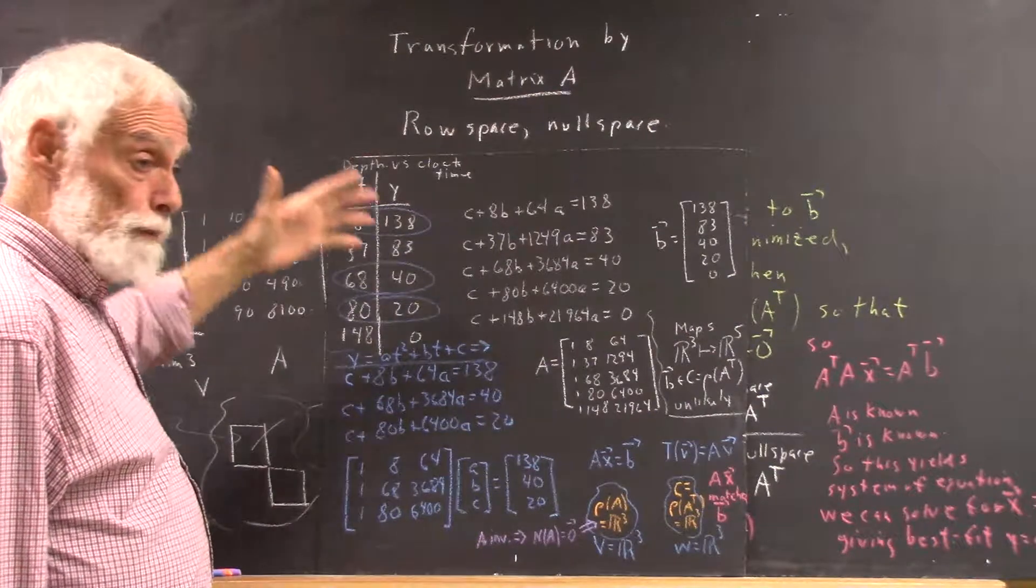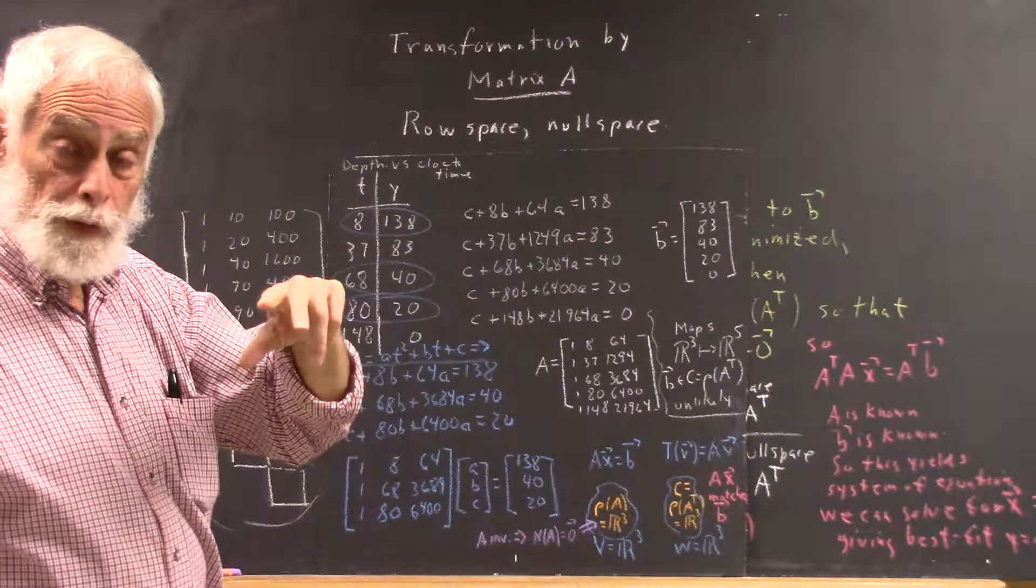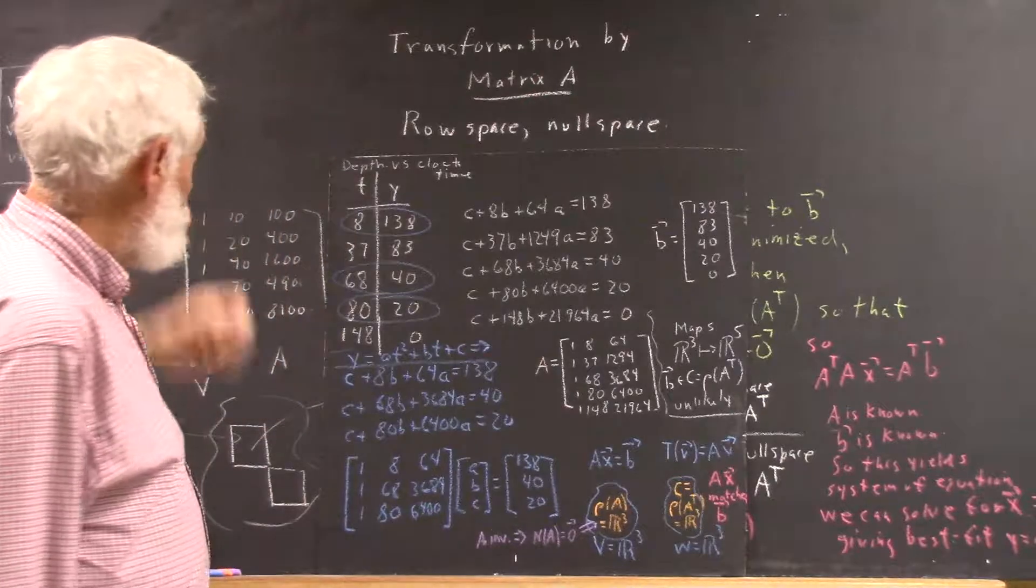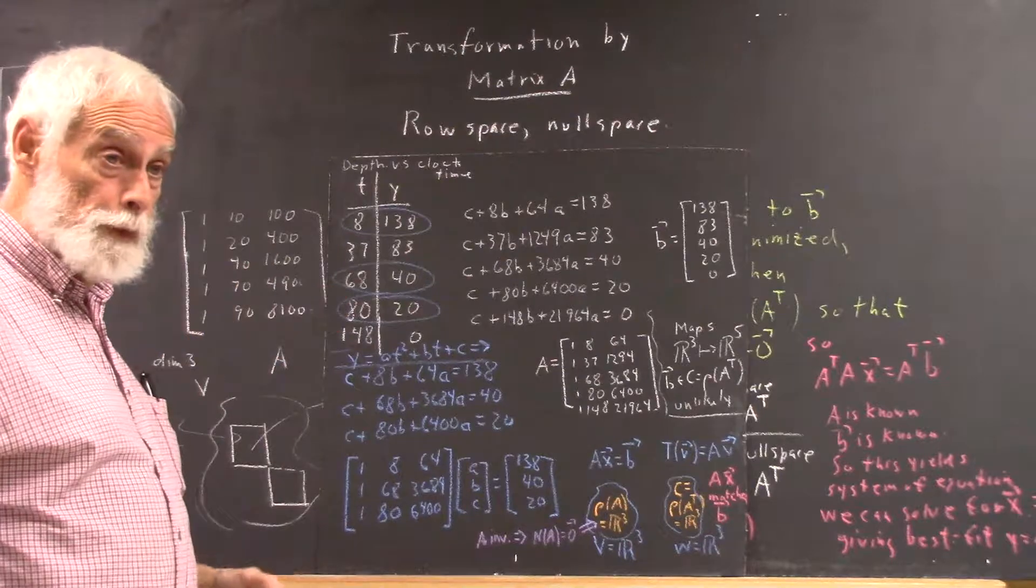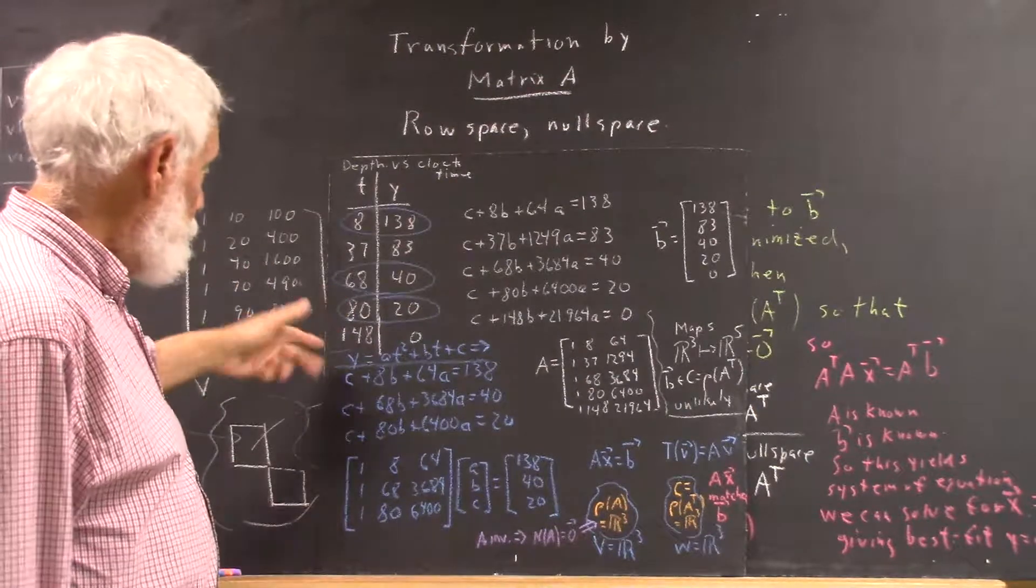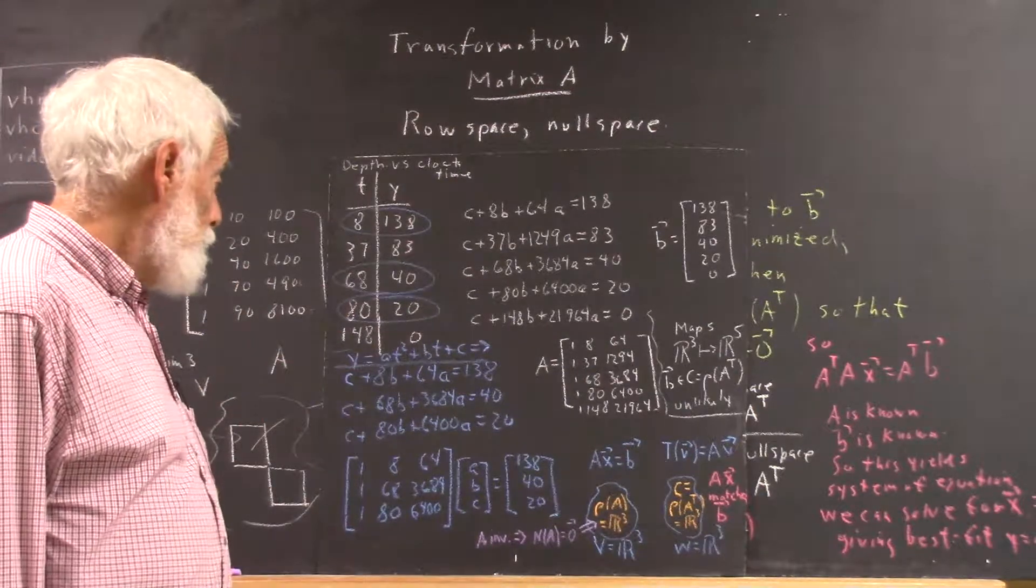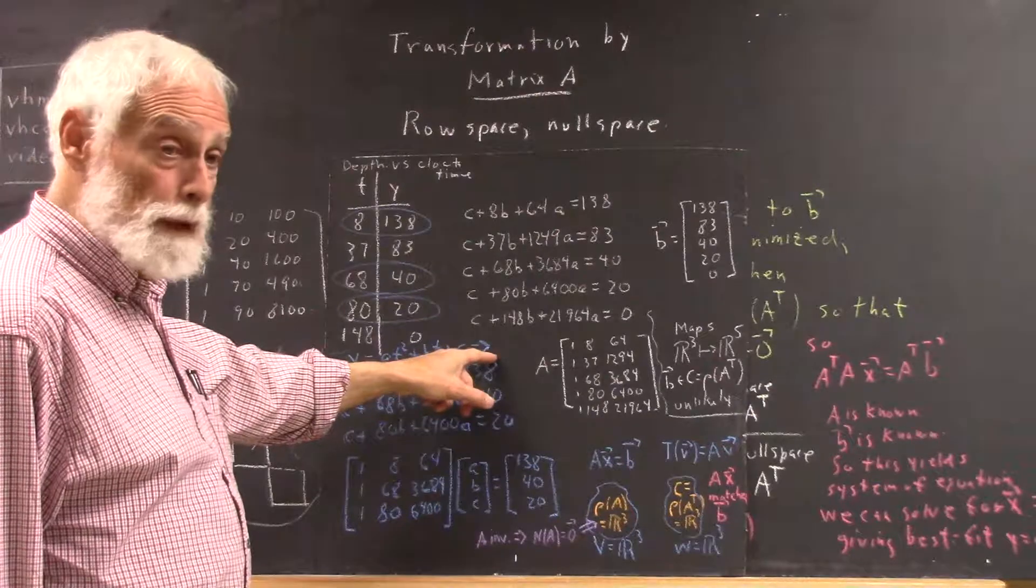The first procedure that we've used in the project is to sketch a graph with these points and then pick three representative points and use them as a basis for a quadratic model.